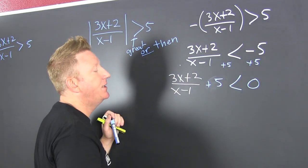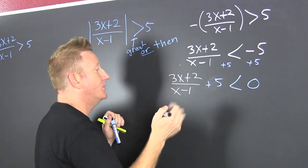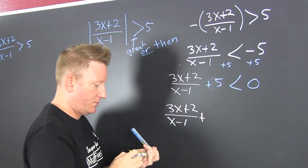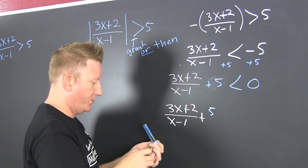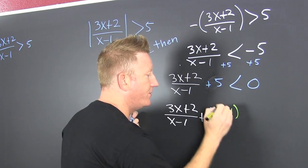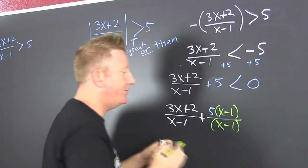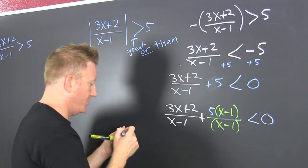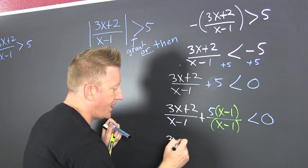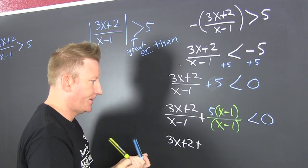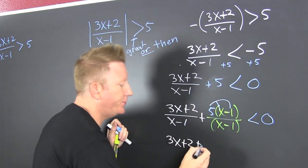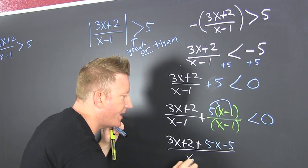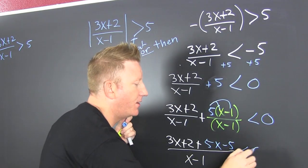We need to multiply top and bottom by the common denominator. We'll multiply top and bottom by (x - 1). Why? So that we can add numerators. And that all needs to be smaller than 0. So now we have that 3x plus 2, plus 5x minus 5. I skipped a step because I'm running out of room. And that's all over that common denominator (x - 1), and all of that is still smaller than 0.